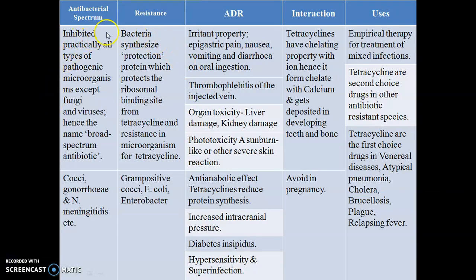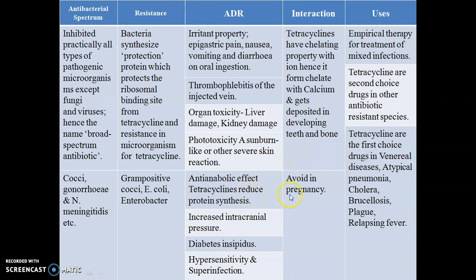The overall antimicrobial spectrum, resistance, adverse drug reactions, interactions, and uses of tetracycline are important to note. The major interaction is that tetracycline has the tendency to form chelates with ions, forming a complex-like structure that is deposited into the teeth and bone. So it is avoided in pregnancy to prevent faulty teeth and bone formation in the fetus.